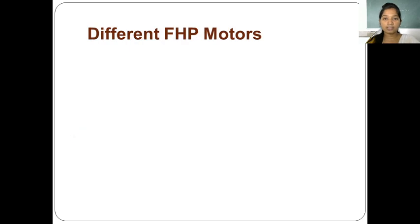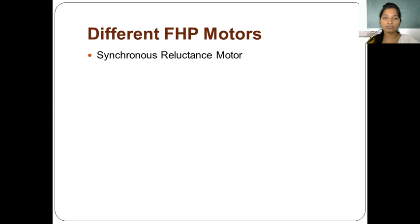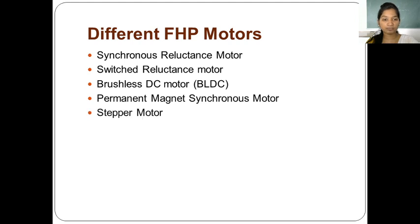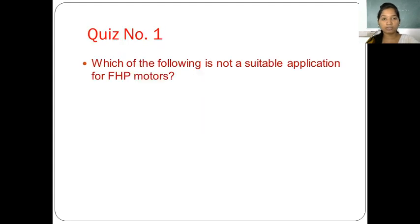Let's see the different types of fractional horsepower motors we are going to learn in this unit. First is synchronous reluctance motor. Second is switched reluctance motor. Third is brushless DC motor. Fourth is permanent magnet synchronous motor. Fifth is stepper motor. And sixth is AC and DC servo motor.